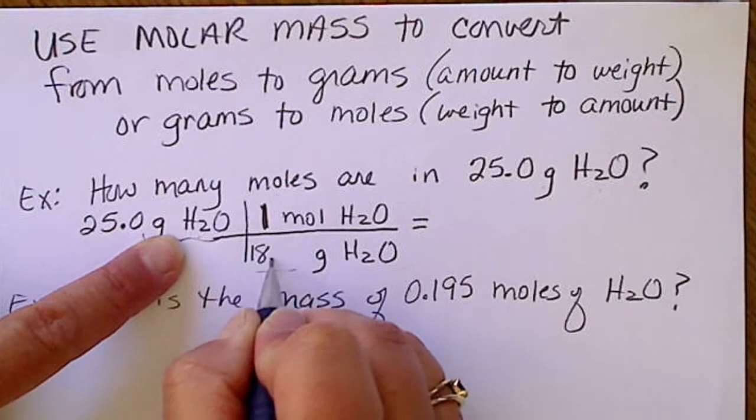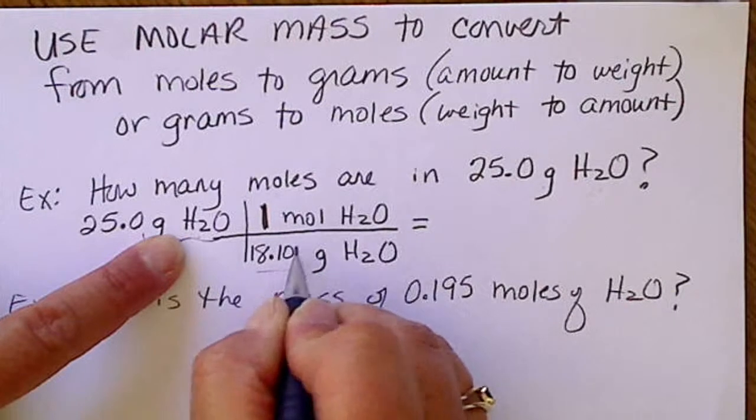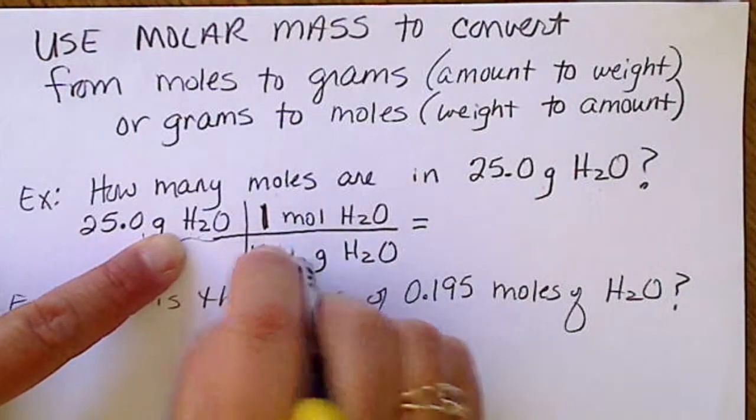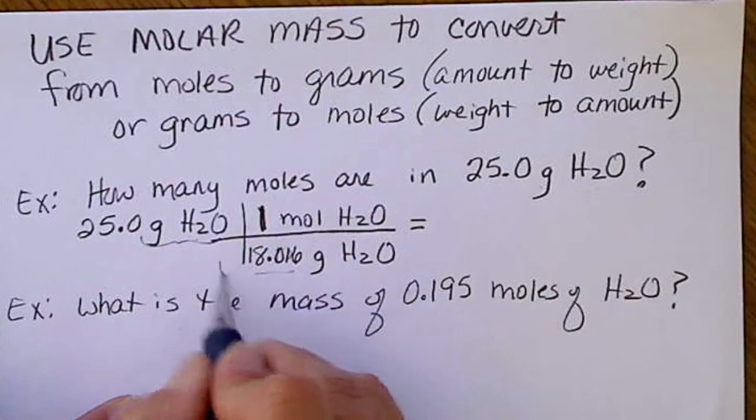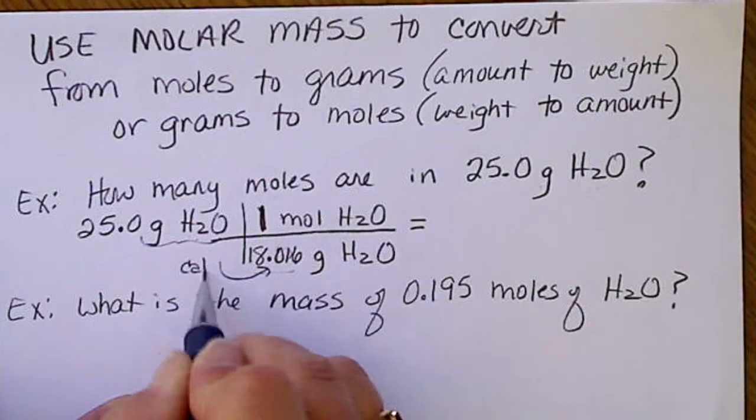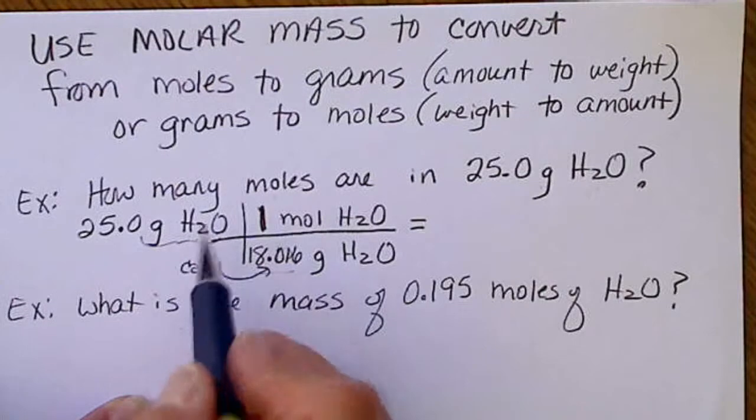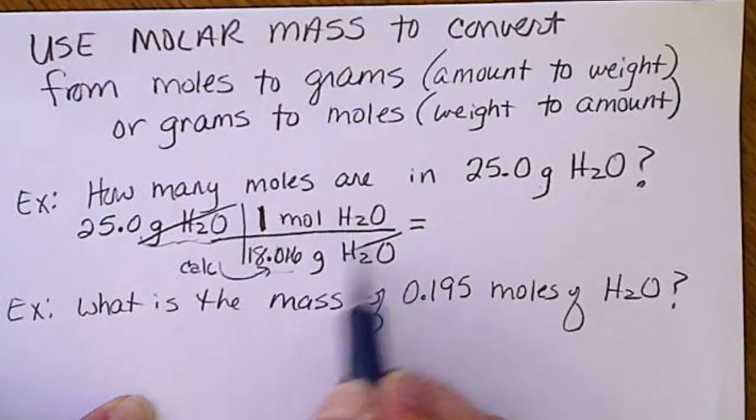So if we get out the periodic table now and multiply 2 times 1.008 plus 16, we're going to get this number down here, 18.016. So this number comes from the calculator, and then grams of water cancels.